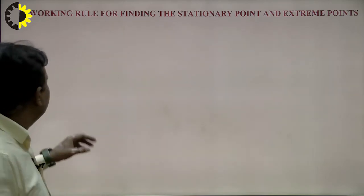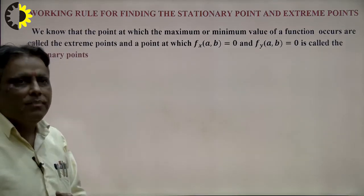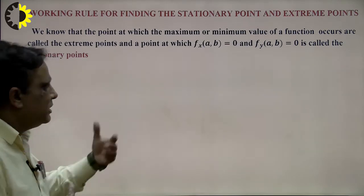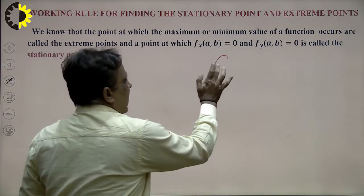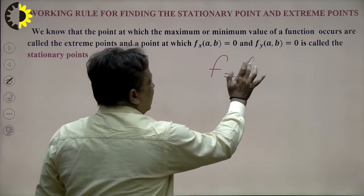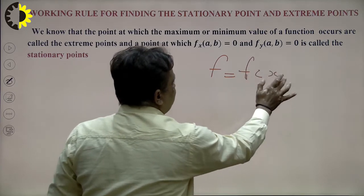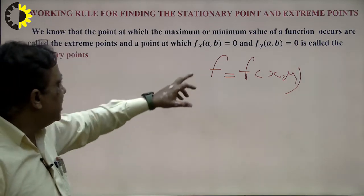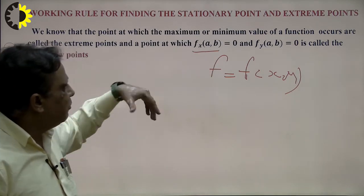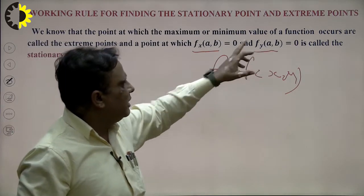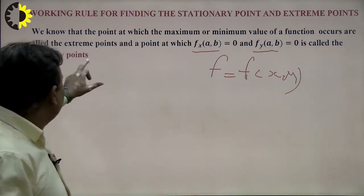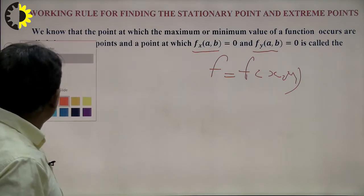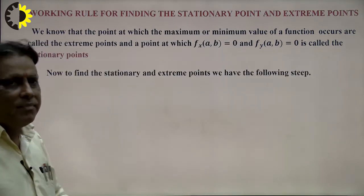Now the working rule — rule to find the stationary point and the extreme point. First, the given curve is in the form of f(x,y), meaning the function contains two independent variables x and y. We differentiate with respect to x and put equal to 0, and differentiate with respect to y and put equal to 0. Such type of points are known as stationary points.